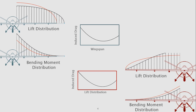Question from the audience: regarding the lift distributions shown for various values of b3, do we ever use the positive values — above the elliptic? The answer is no: zero is the elliptic, and we use things below this. We're just showing what they would look like with a positive b3 coefficient, but we don't use those in practice.